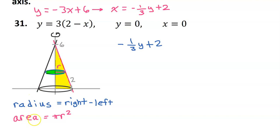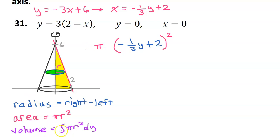Step two is to write an expression for the area of a single disk. The area is always pi r squared. Since we have an expression for the radius, we square it and put pi in front. Step three is to write an expression for the volume by integrating the area. We integrate with respect to y because the disks are stacked vertically, from 0 to 6. So those are the limits of integration — integrating adds all the disks from 0 to 6 to get the volume.